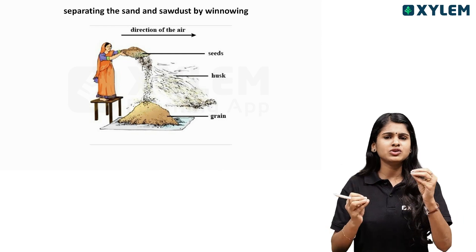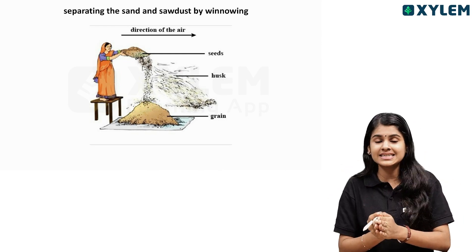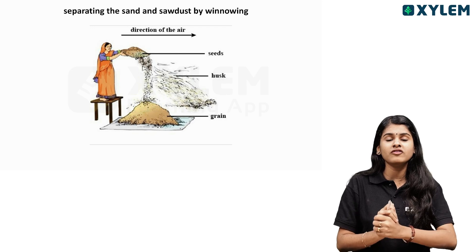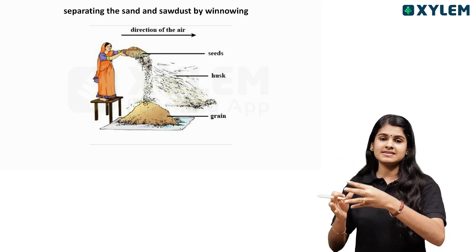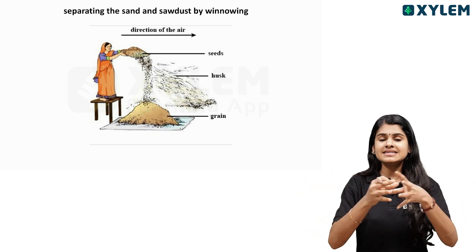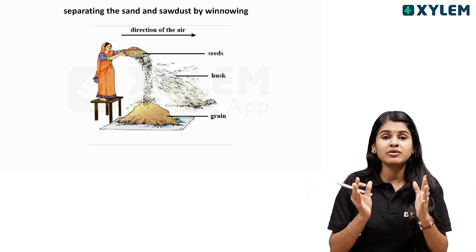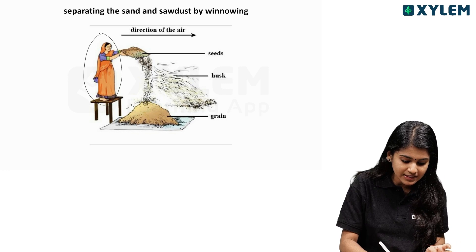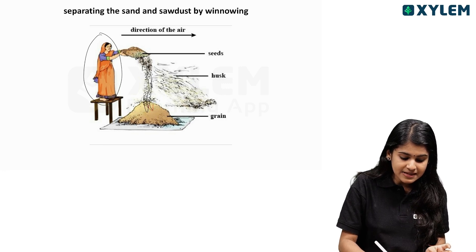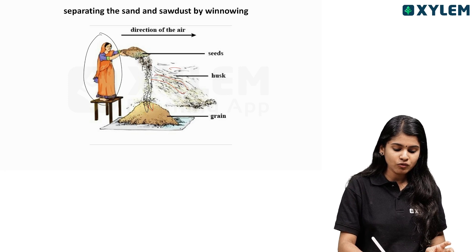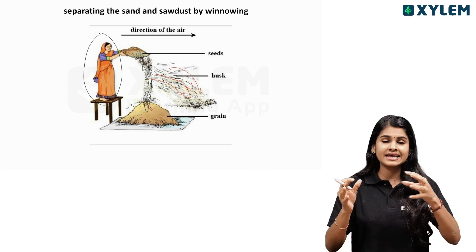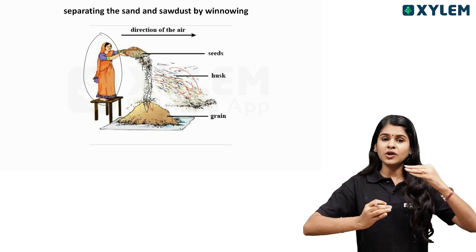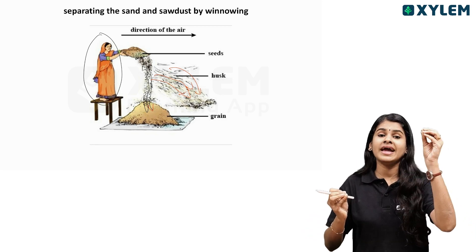We are going to study the first chapter. We are going to separate the strand and sawdust by winnowing. What is wind? Air or wind.